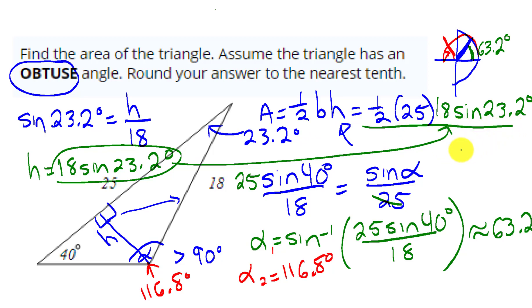That should give me, and I'll round to one decimal place, the area of this triangle. It looks like to one decimal place I get 88.6.